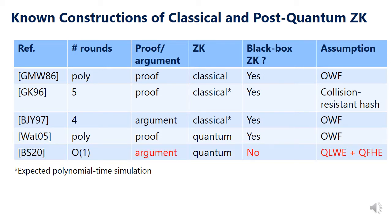This open problem was recently solved by Bitansky and Shmueli. They constructed a constant-round post-quantum zero-knowledge argument. However, there were several caveats: first, their construction is an argument, so it only satisfies computational soundness; second, they rely on a novel non-black-box simulation technique, meaning their protocol is not black-box zero-knowledge; and third, their assumption is rather strong — the quantum hardness of LWE and the existence of quantum fully homomorphic encryption.